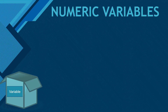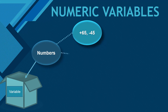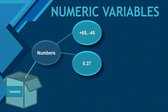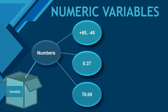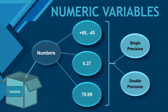Numeric variables store only numbers. Numbers can be of three types: the first are integers, which have no fractional part; the next are floating point numbers, which are fractional part numbers; and the third are real numbers, which have both integral and fractional parts. These numbers could be single precision or double precision.